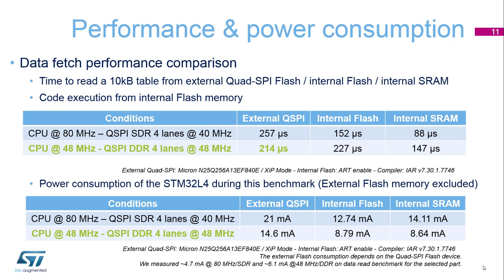In single data rate mode at 80 MHz, the internal flash memory is 40% faster than the external Quad SPI. But in double data rate mode at 48 MHz, the Quad SPI takes advantage of its prefetch mechanism and is even a little bit faster than the internal flash memory access.